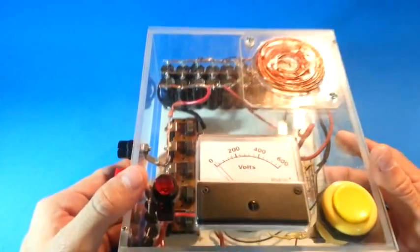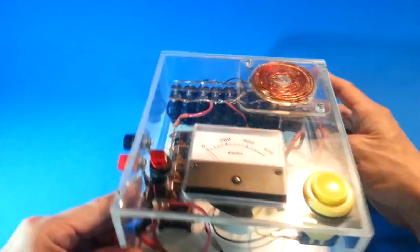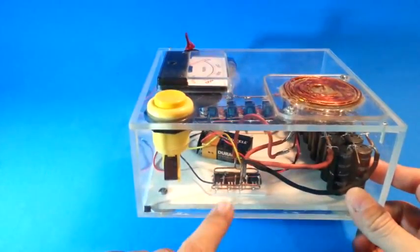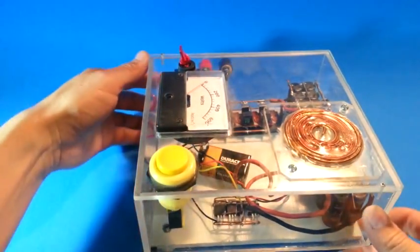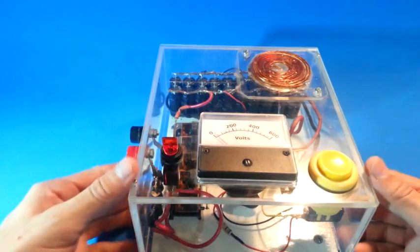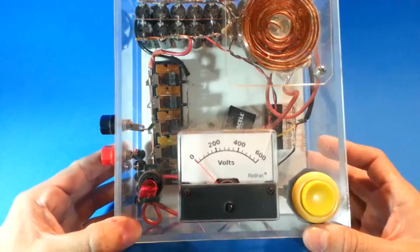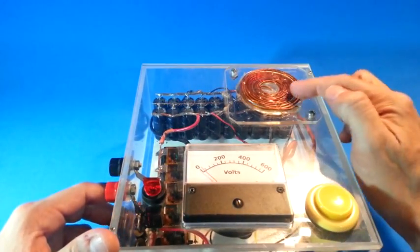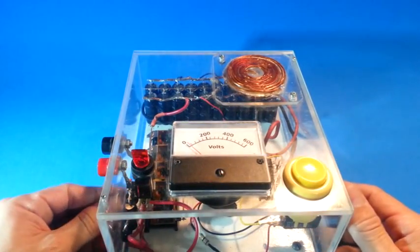Now, in order to dump the energy to the coil, we use a trigger mechanism based on an SCR. So when we push the button, all the energy stored in the capacitor bank is dumped into the coil and the magnetic field is generated.